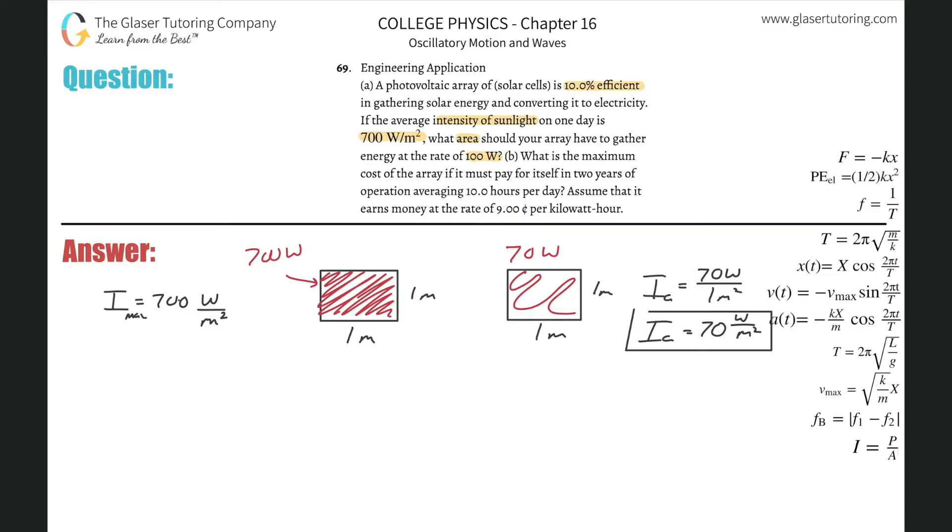Well, the actual intensity is going to be, I'll call it I sub A, the actual intensity is going to be 70 watts divided by then the one square meter. Or in other words, the actual intensity is going to be 70 watts per meter squared. That's the actual intensity. This was the max intensity. So now that we know the actual amount of sunlight intensity that this photovoltaic array can absorb, now we can find the area that we would need to gather then 100 watts in total.